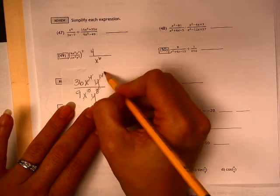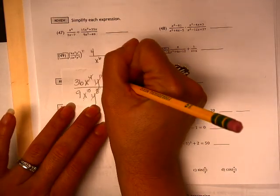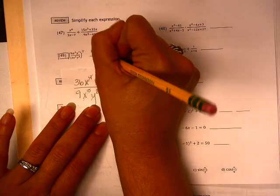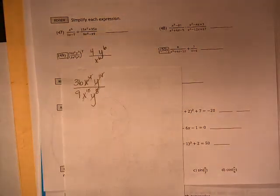And then the reverse happens here. You end up with 6 more of these on the top than there are on the bottom. So that would be the final answer.